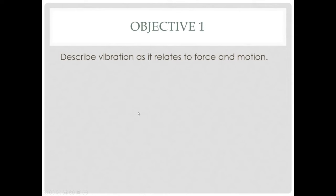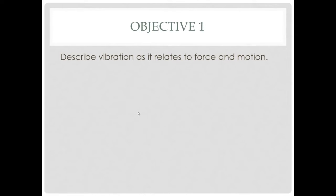Objective one: describe vibration as it relates to force and motion. Most of us are familiar with vibration. Quite simply put, vibration is an object that's moving back and forth, side to side, oscillating, or any kind of motion that it's not really designed to do — we call that vibration. It could be a vibrating pump, motor, belts, or fans. Any type of mechanical motion, whether spinning, shaking, wobbling, or oscillating, could be seen as a form of vibration.